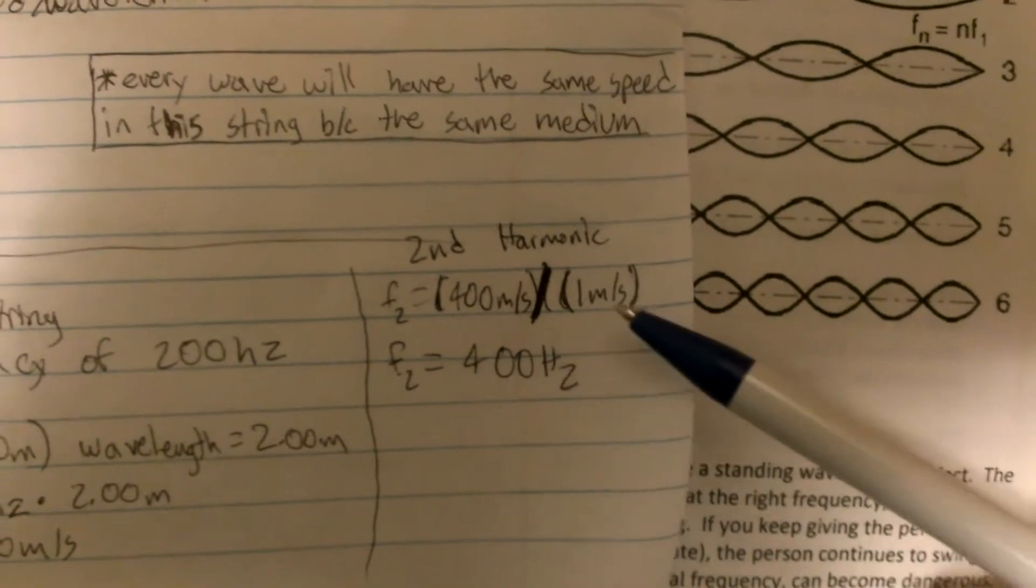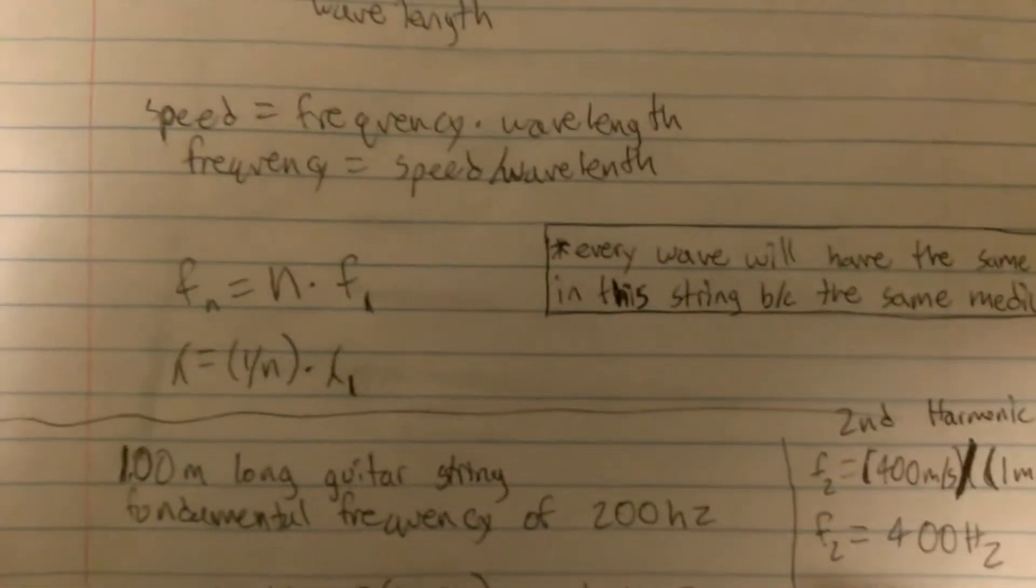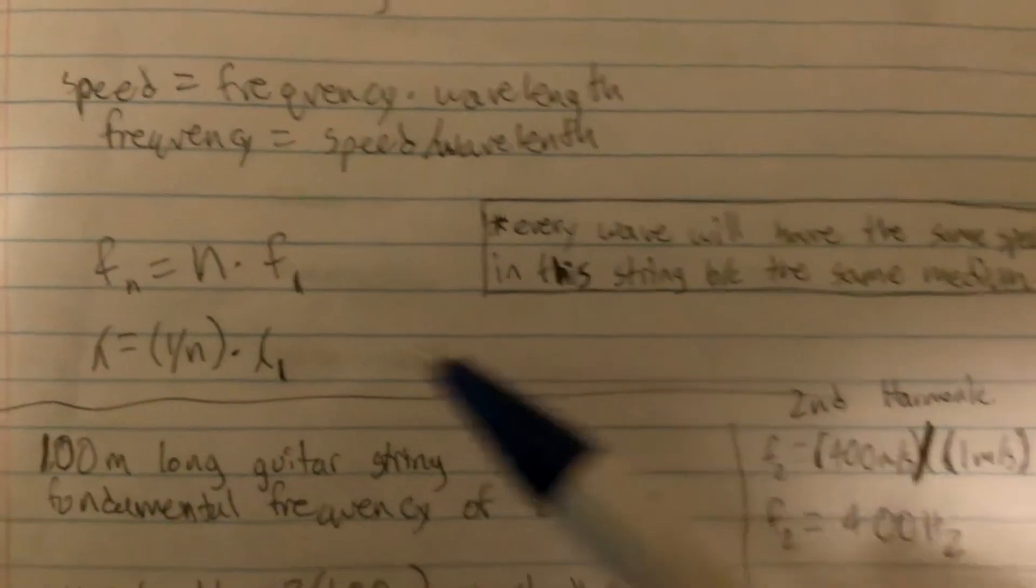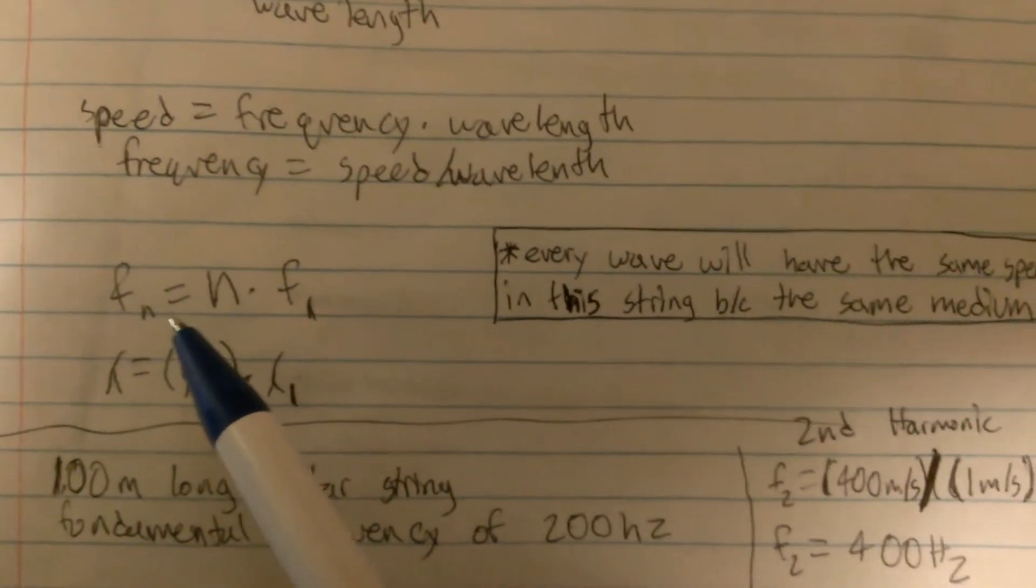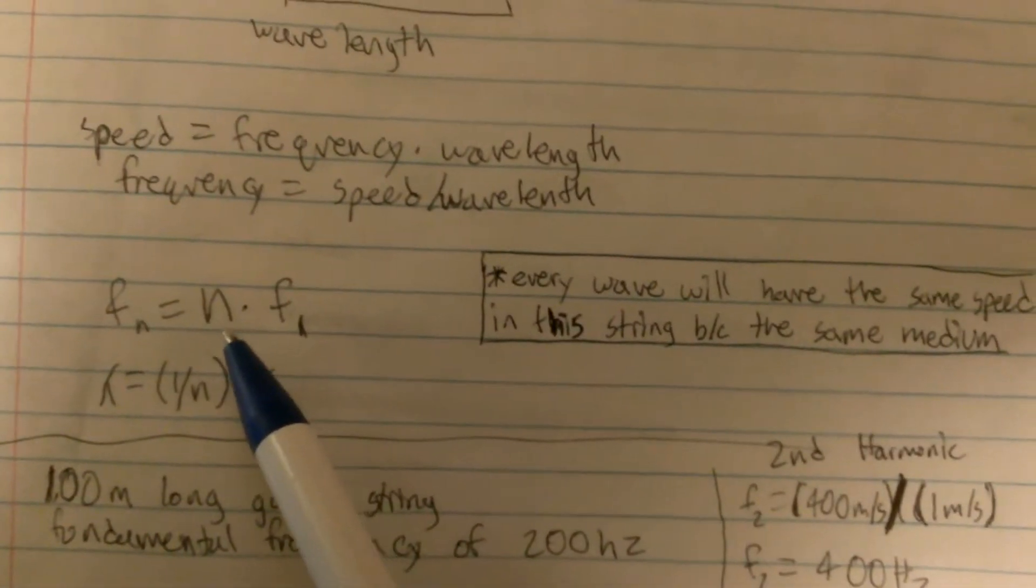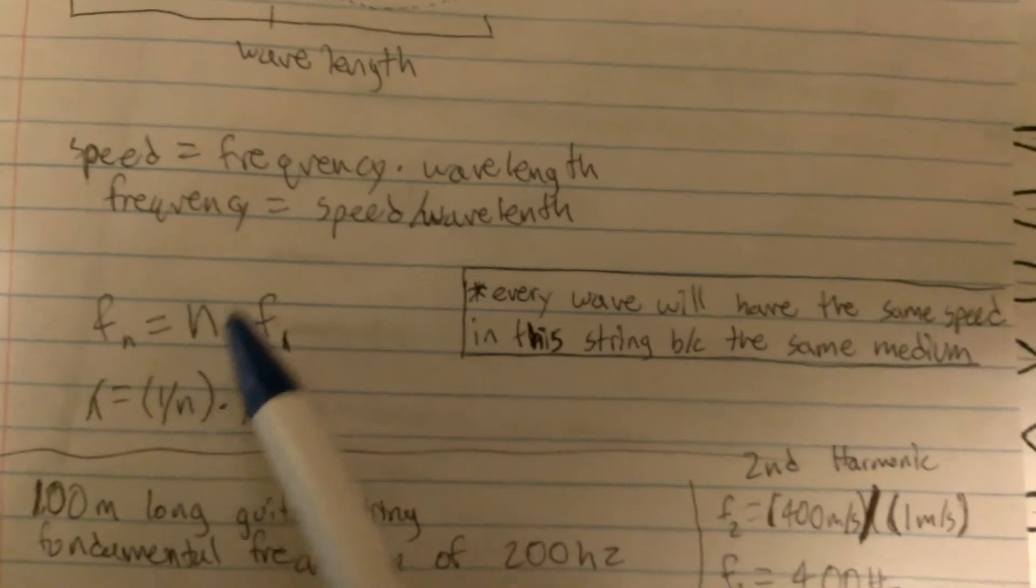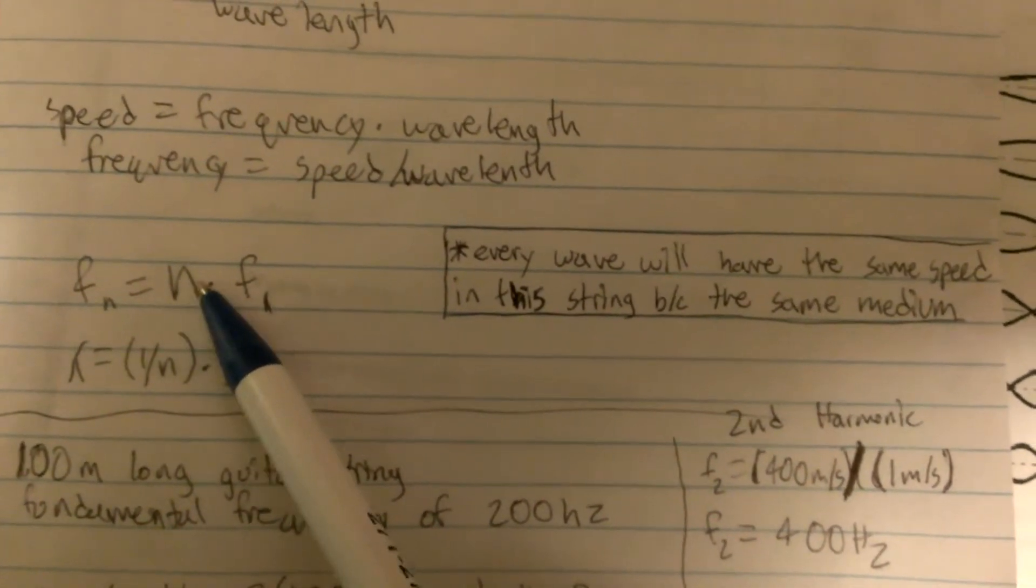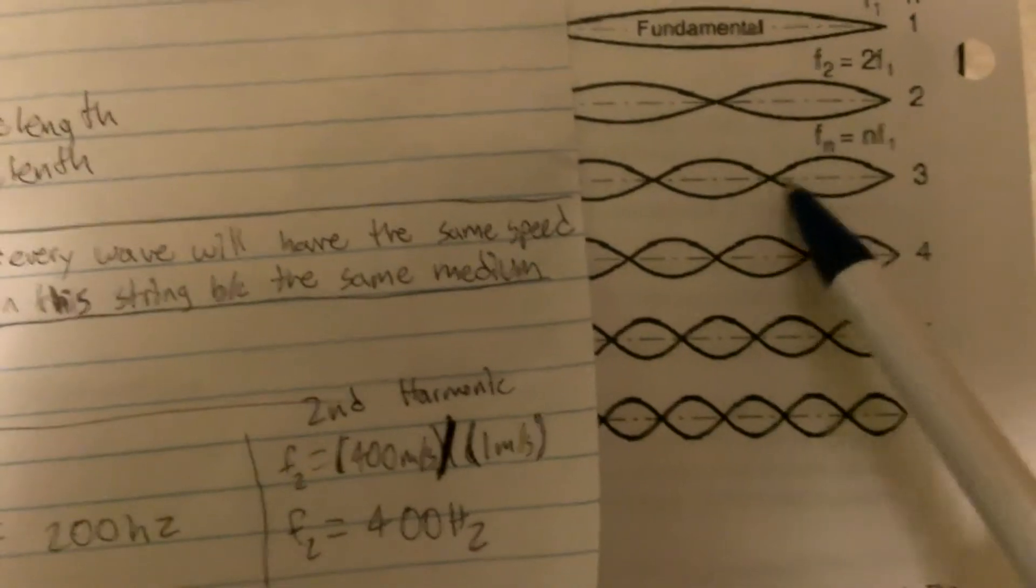When you divide 400 meters per second by one, it gives you your second frequency of 400 hertz. I've found a couple easier ways to do it, instead of having to go through that to find each harmonic. If you look at this, this is your frequency for whatever number. So, if it is your third frequency, and if you put a three in for here, because this is the number frequency it is, you would multiply three by your original frequency, which is 200 hertz. So, for the third harmonic, you would multiply three times the original 200, and that gives you 600 hertz, which is the frequency of your third harmonic.